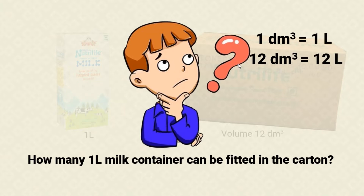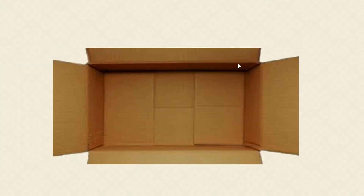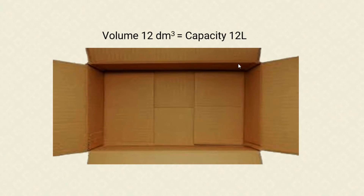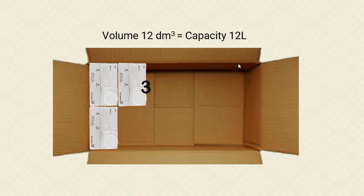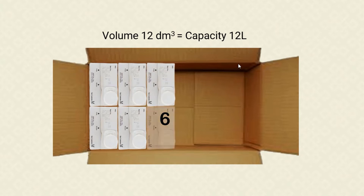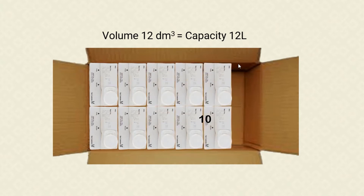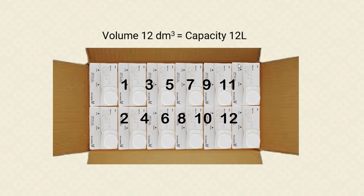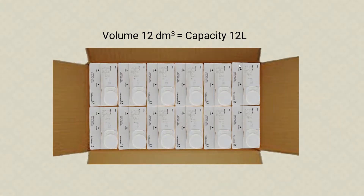To demonstrate this we will look at a simple illustration. This is the carton and we will try to fit the milk containers here. Let's see how many milk containers this carton is able to fit: 1, 2, 3, 4, 5, 6, 7, 8, 9, 10, 11 and 12. So this milk carton is able to fit 12 milk containers. Therefore our conclusion is verified: 12 cubic decimeters is equal to 12 litres.